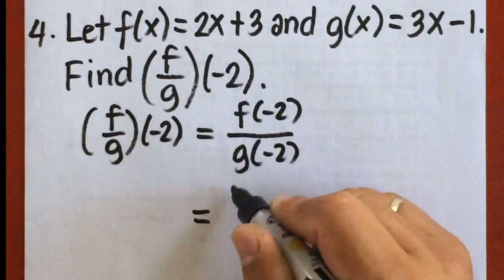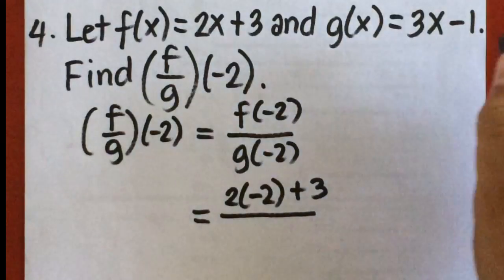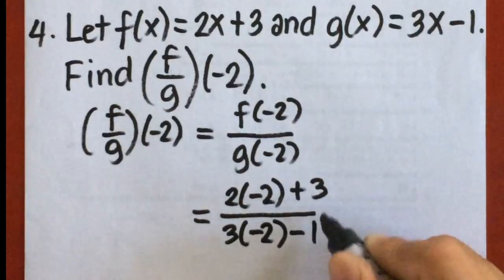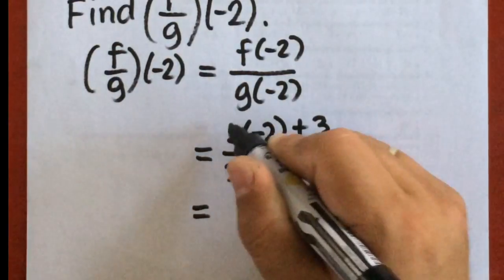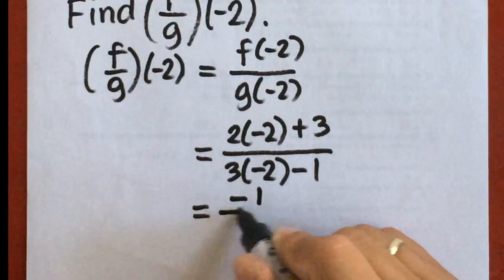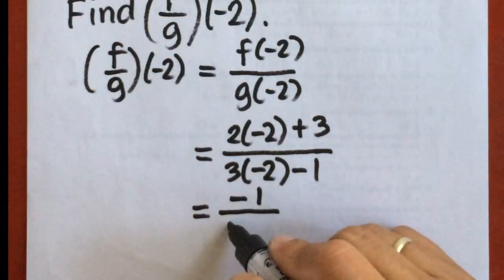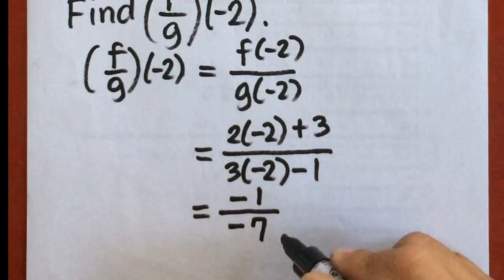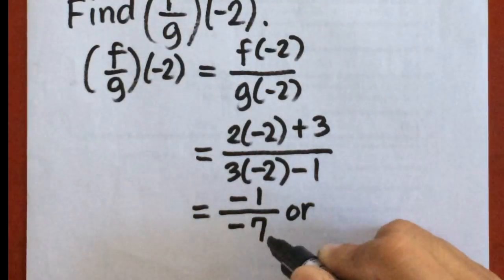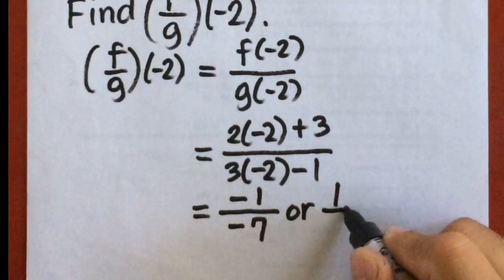So f of negative 2 will be 2 times negative 2 plus 3 over g of negative 2 will be 3 times negative 2 minus 1. Then 2 times negative 2 is negative 4 plus 3, that will be negative 1 over 3 times negative 2 is negative 6 minus 1, that will be negative 7. Negative 1 over negative 7. So negative divided by negative is positive, so we're going to have the answer as 1 over 7.